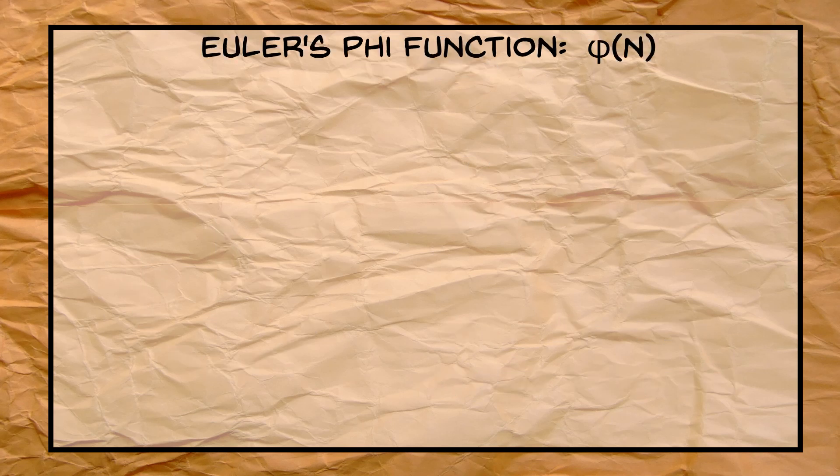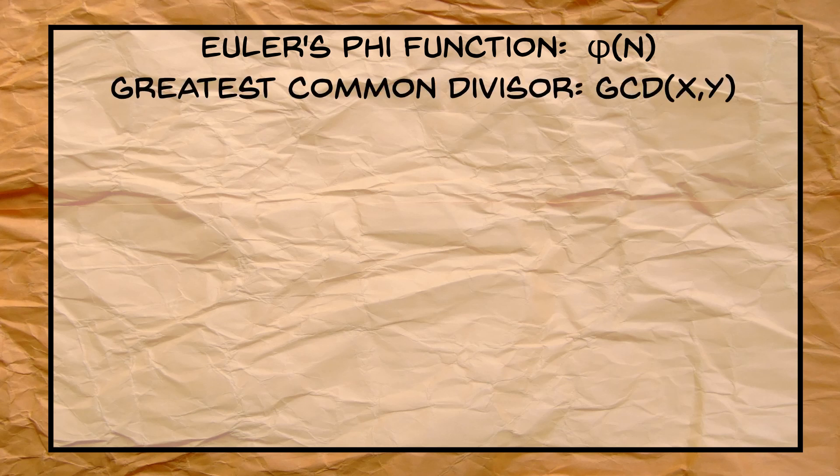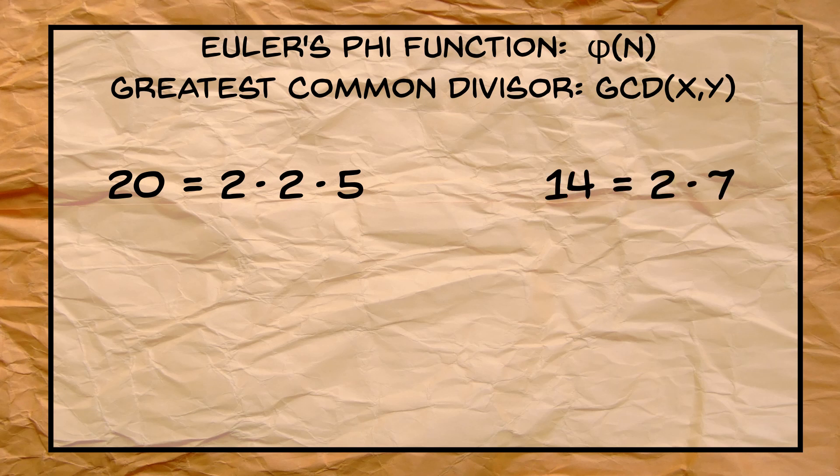Euler's phi function is also not a complicated function, but it does require the idea of the greatest common divisor. It is a common fact in mathematics that every integer has a unique product of prime factors, for example 20 equals 2 times 2 times 5, and 14 equals 2 times 7. Two integers have a common divisor if one of those prime factors is the same, and the greatest common divisor is the product of all common divisors. So the greatest common divisor of 20 and 14 is 2.